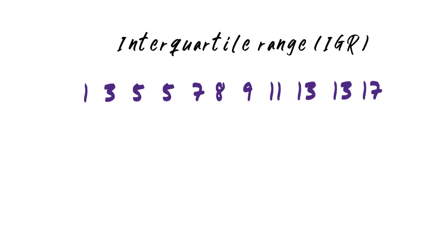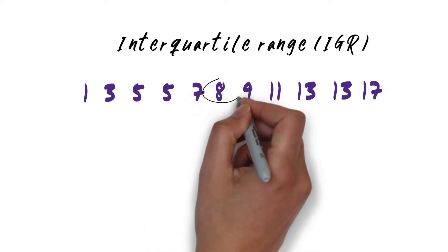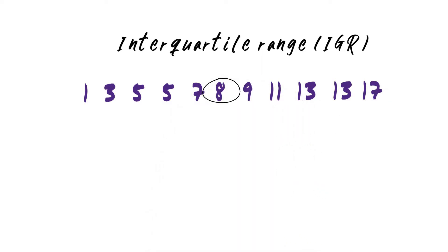First, find the median. Our median is 8. This is the number that's going to split your data set into categories: lower half and upper half.